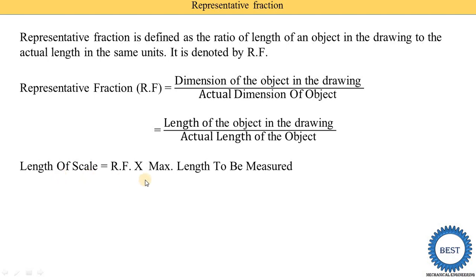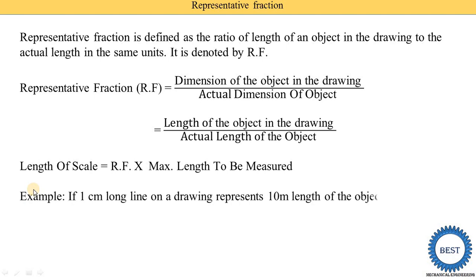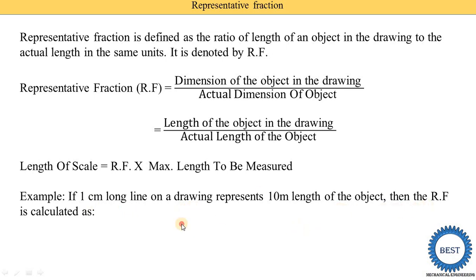In numerical problems, the maximum length of the object or maximum length to be measured is given, and the representative fraction is given. So we can find out the length of scale — meaning we need to draw the length of the object on a drawing sheet. Now we consider one example: if a one centimeter long line on a drawing represents 10 meters length of the object, then the RF is calculated as follows.